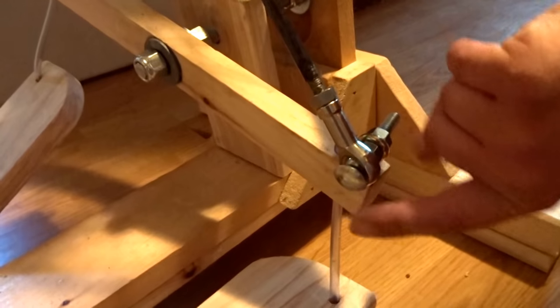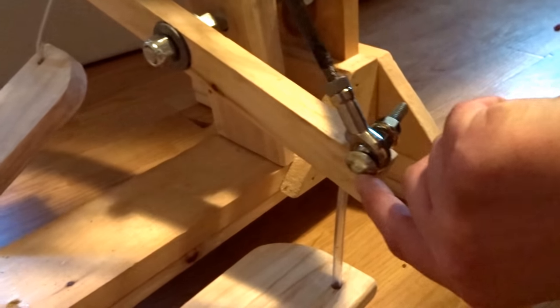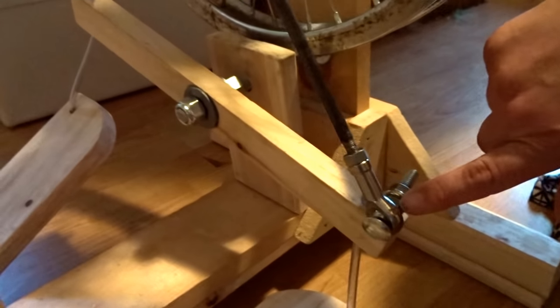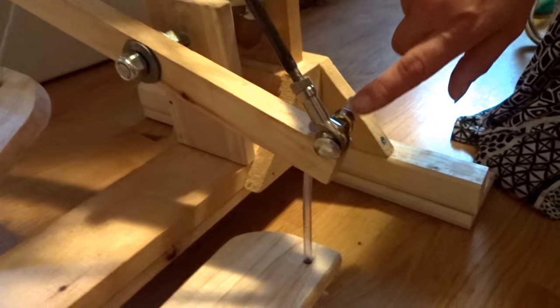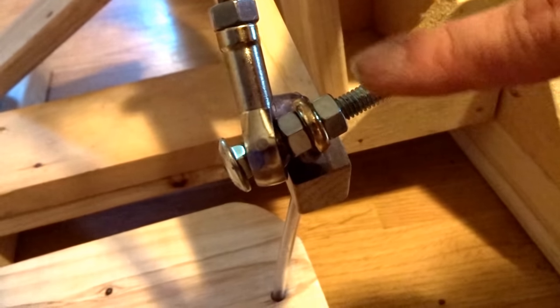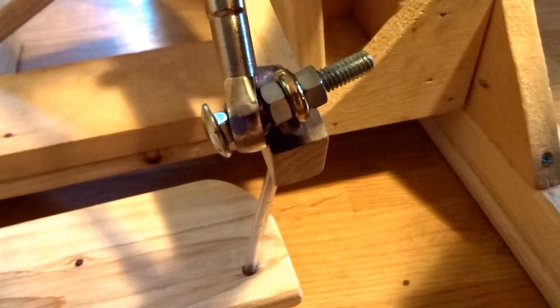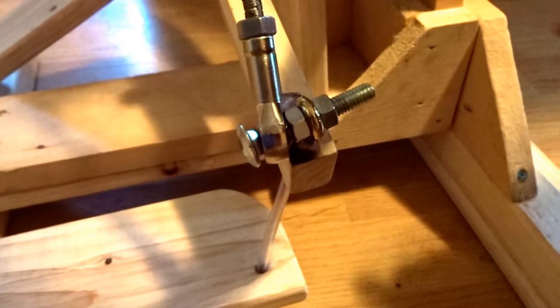We've got the bolt here going through the bearing rod end, then we have our other nut here, then we have our eye hook, and then we have another nut. It doesn't have to be this long—mine was like three inches. It could definitely be shorter than that. Again, it depends on what you're working with exactly.